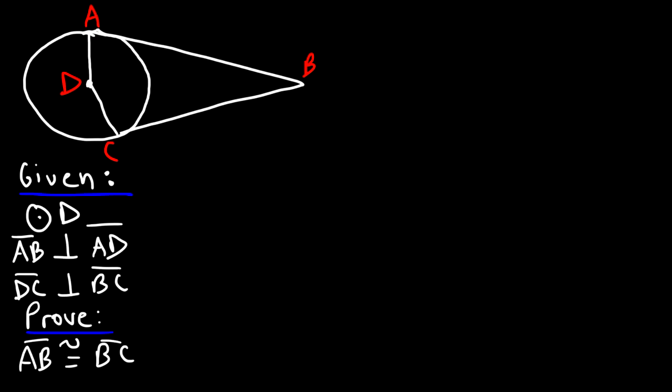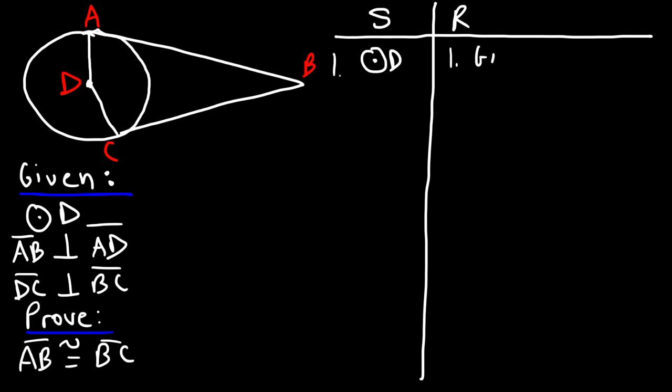Let's make a two-column proof: S for statements, R for reasons. The first statement we could say is that D is the center of the circle, and this information is given to us.